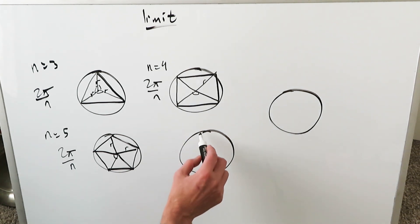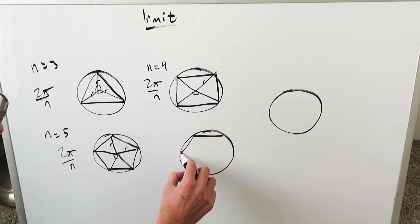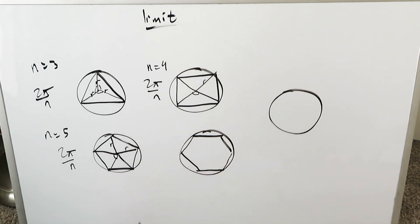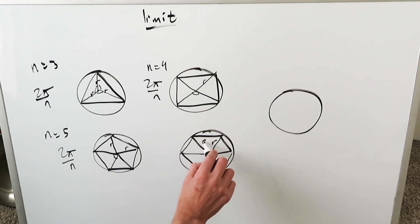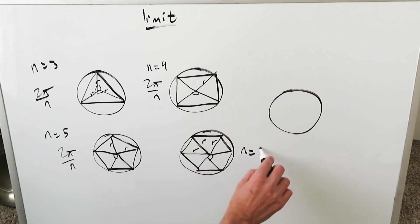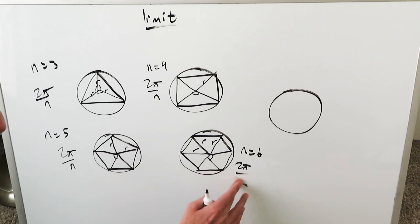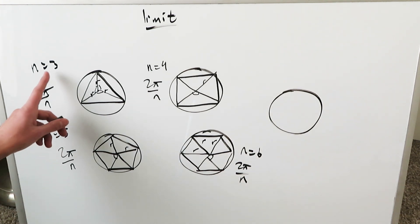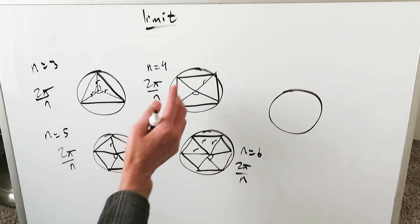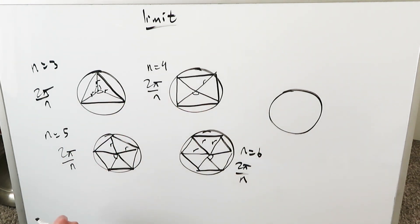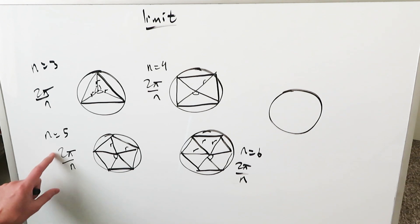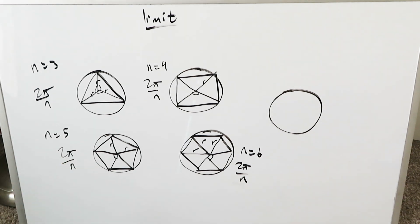You're getting the idea of what's happening. As you draw inscribed polygons with more and more sides, you have more congruent triangles generated and the internal angle gets smaller as n gets larger. For a hexagon, n equals 6, and I'll write 2π over n where n equals 6. Clearly, as the n values get larger the angle is always getting smaller: 2π/3 > 2π/4 > 2π/5 > 2π/6.